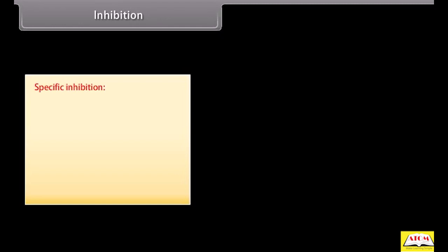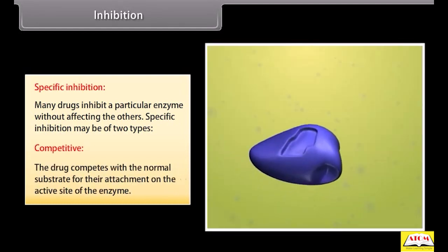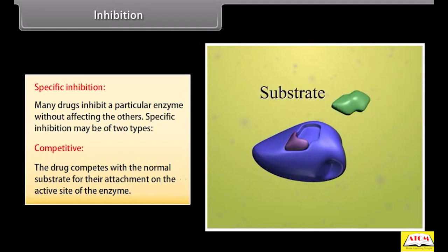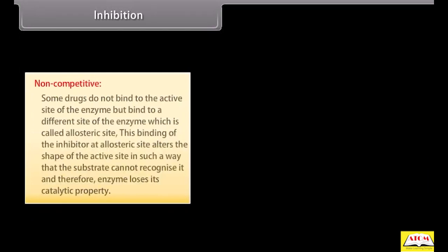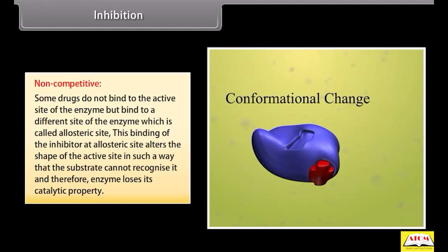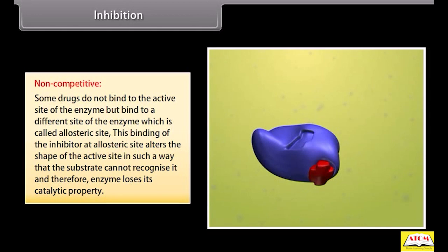Specific inhibition: many drugs inhibit a particular enzyme without affecting the others. Specific inhibition may be of two types — competitive and non-competitive. In competitive inhibition, the drug competes with the normal substrate for attachment on the active site of the enzyme. In non-competitive inhibition, the drug binds to a different site called the allosteric site, which alters the shape of the active site so the substrate cannot recognize it and the enzyme loses its catalytic property.